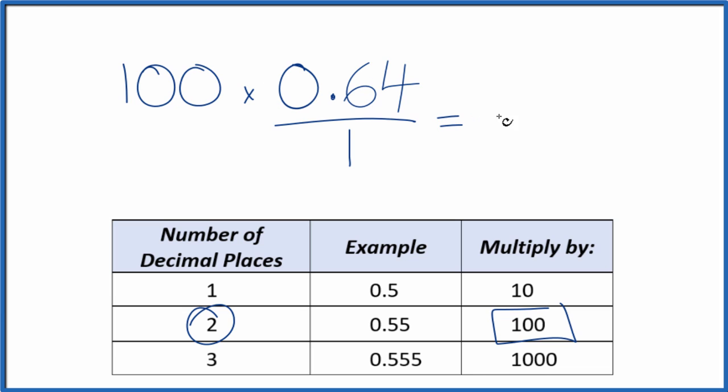So 100 times 0.64 is 64. So that's our whole number. But we can't just multiply the numerator by 100. We also have to multiply the denominator. So 100 times 1, that'll give us 100. And there's our fraction 64 over 100. So the decimal 0.64 equals the fraction 64 over 100.